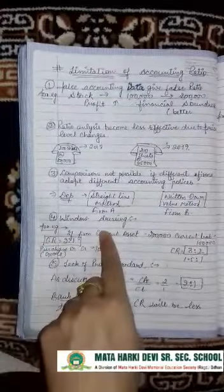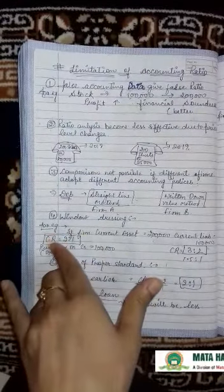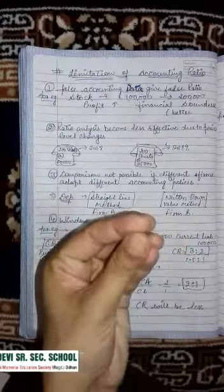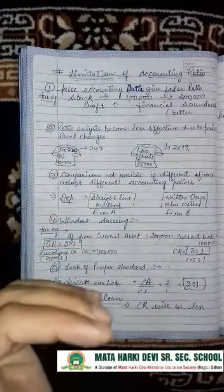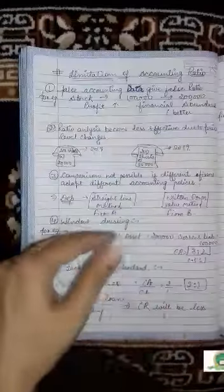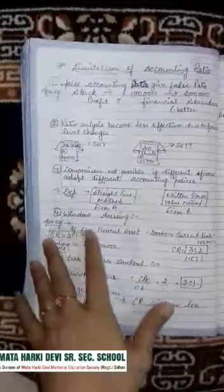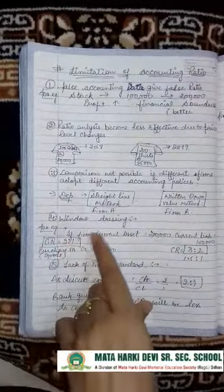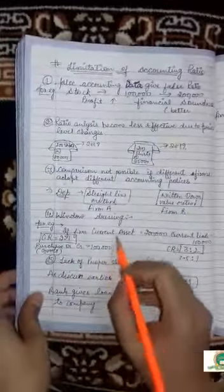The fourth point is window dressing. Window dressing means some companies, in order to cover up their bad financial position, resort to window dressing — showing a better position than the one which really exists. For example, a firm's current assets are 2 lakh and current liabilities are 1 lakh, and the current ratio is 2:1, which is the ideal ratio. But if you purchase goods on credit of Rs. 1 lakh in March...